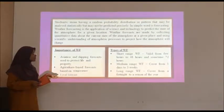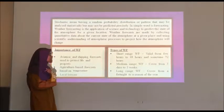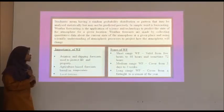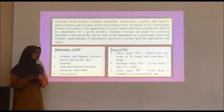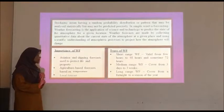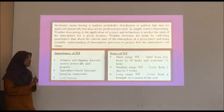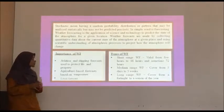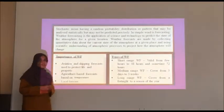Weather forecasting has three types. The first one is short range weather forecast, which varies from few hours to 48 hours and sometimes up to 72 hours. The second type is medium range weather forecast, which covers from three days to three weeks. And the last one is long range weather forecast, covered from a fortnight to a season of the year.